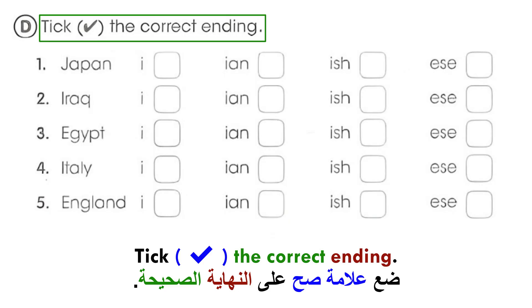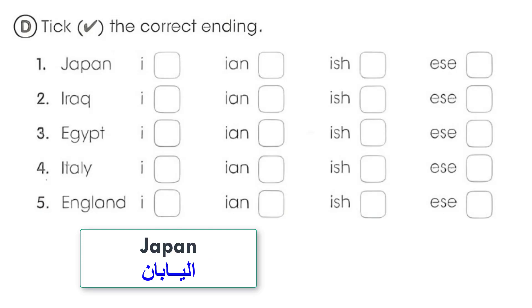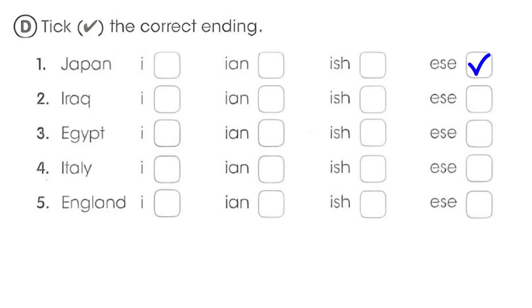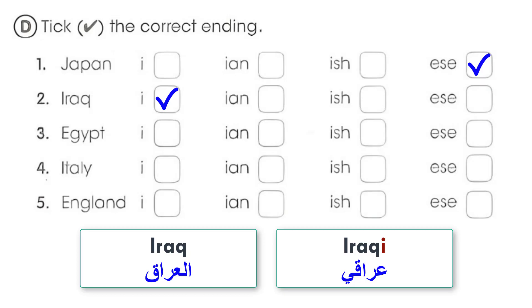Tick the correct ending. ضع علامة صح على النهاية الصحيحة. 1. Japan اليابان → Japanese ياباني. 2. Iraq العراق → Iraqi.